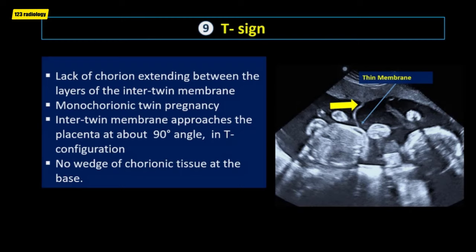The T-sign refers to the lack of chorion extending between the layers of the inter-twin membrane, denoting a monochorionic twin pregnancy. The inter-twin membrane approaches the placenta at about a 90-degree angle in a T configuration, with no wedge of chorionic tissue at the base.